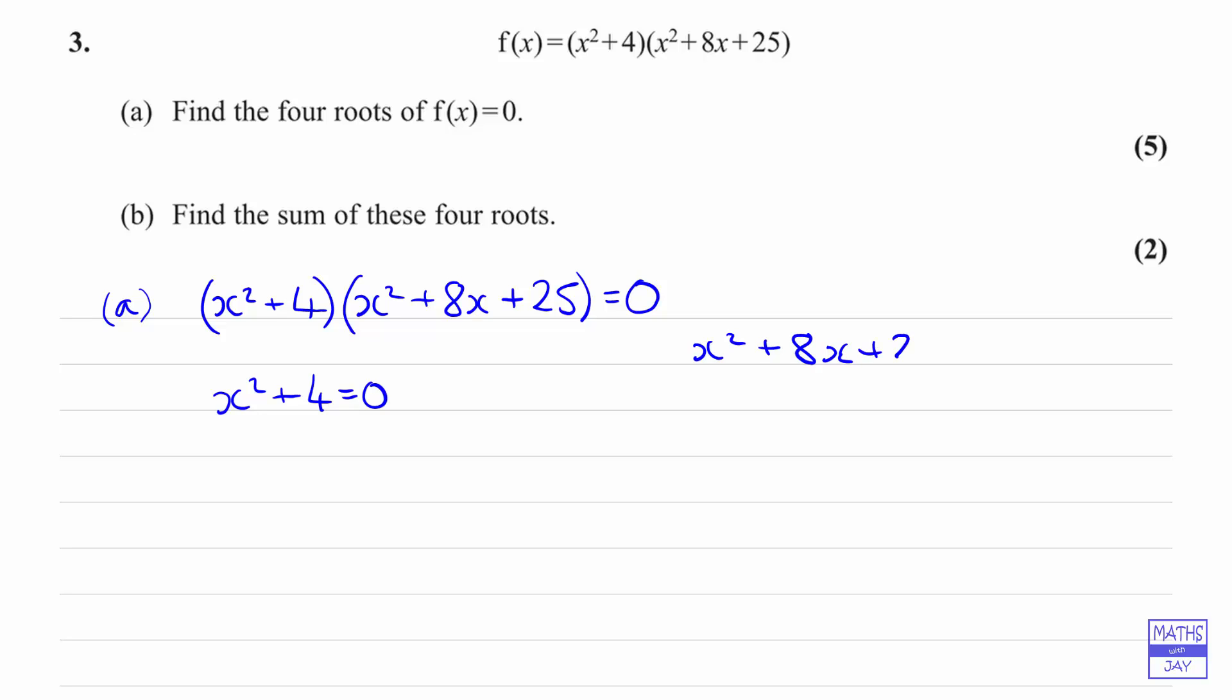Let's start off with x² + 4 = 0. Well, we can subtract 4 from both sides to get x² = -4, and then square rooting, x is going to be plus or minus the square root of -4.